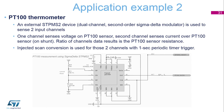The second example is a PT100 thermometer which uses an external STPM S2 Sigma Delta modulator monitoring two analog channels. One channel measures the voltage and the second one the current through the PT100 sensor. Both channels are sampled using time-triggered injected conversion in scan mode. Software then determines the PT100 resistance from the collected current and voltage data and finally computes the sensor temperature.